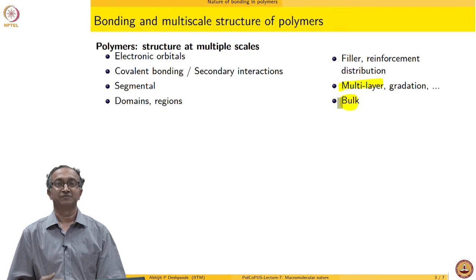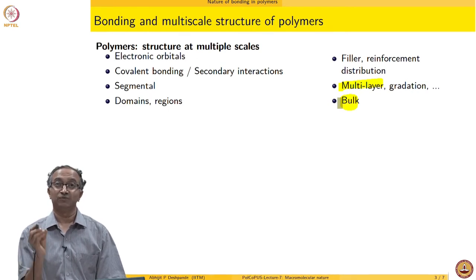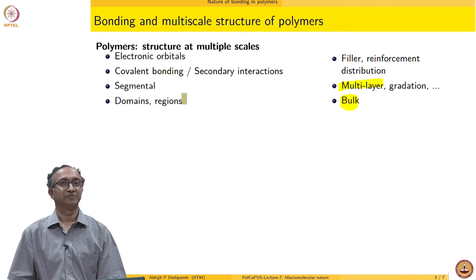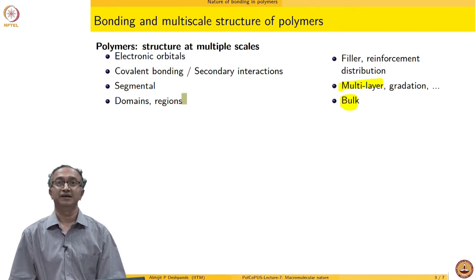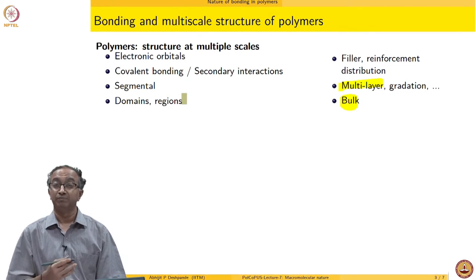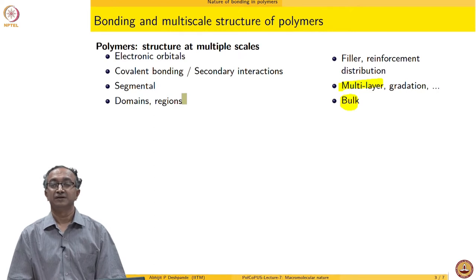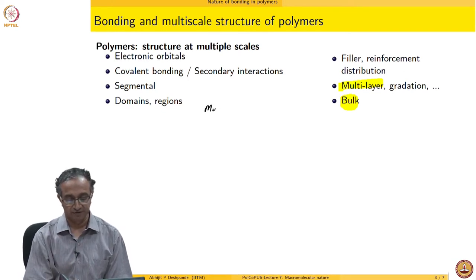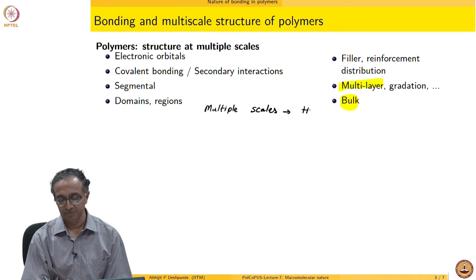When we are designing a product or a particular application, in the end we worry about the bulk properties of the material. The overall multi-layer film — what diffusion does it allow of oxygen, or what kind of domains and regions does it have so that the diffusion coefficient is a given value. So in the end, we are targeting bulk properties. But underlying that bulk property is the structure at these multiple length scales, and associated with all of these multiple length scales is a response of basic entities from electrons to fillers where the time scales are also different.